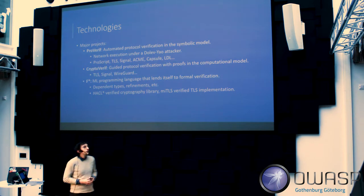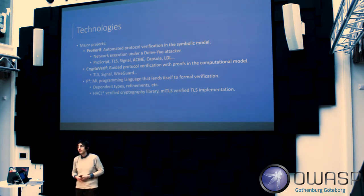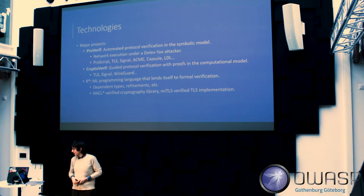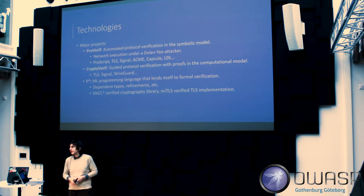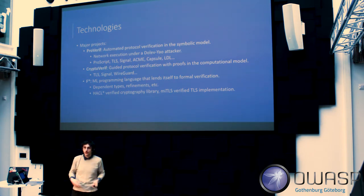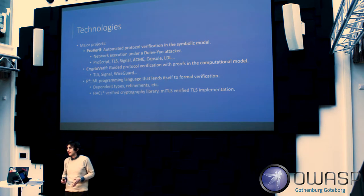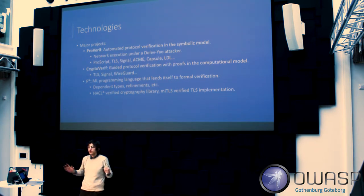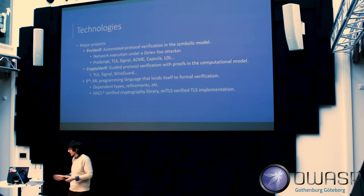I'm also going to talk about F-star. F-star is what happens when French academics, who are crazy about OCaml, are left alone long enough — they produce something even more OCaml than OCaml. It's an unholy Frankenstein-like combination of an ML programming language and an SMT solver. Lightning strikes in the background. Out comes this weird thing where types are proofs.